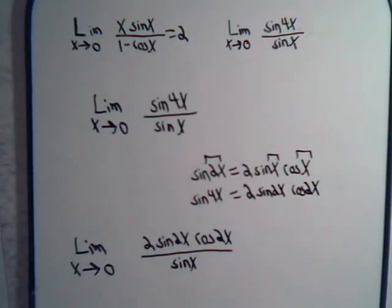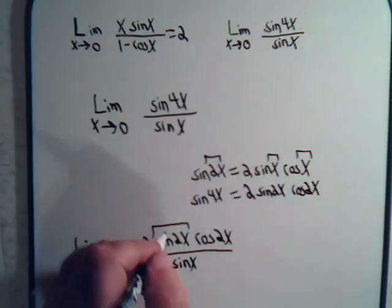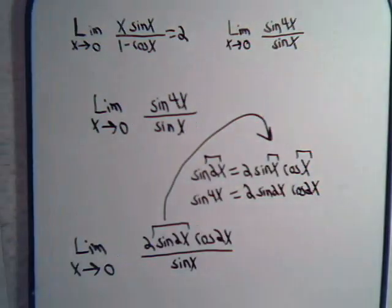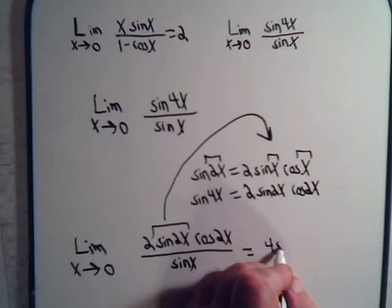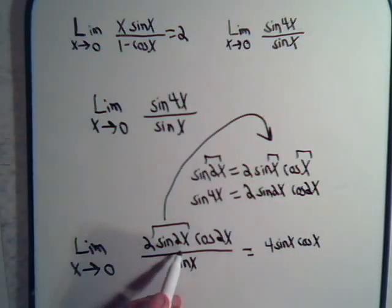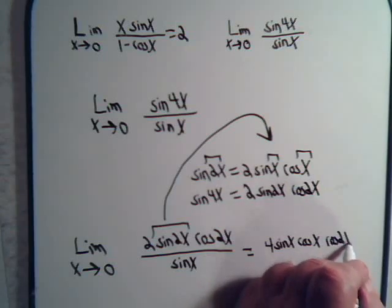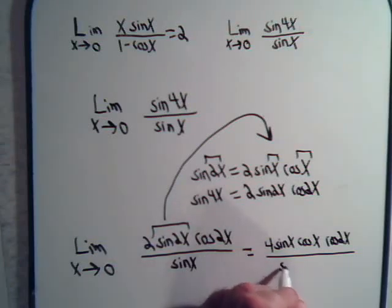But here, we still have these pesky, these troublesome sine functions. We put x equal to 0, that's 0, and that's going to be 0. But here, again, we have our double angle formula. This is this. So, once again, we can rewrite the numerator. It's going to be 2 times this stuff. So, that's going to be 4 times the sine of x times the cosine of x. That's 2 times the sine of 2x is 2 times this. And we have this, the cosine of 2x divided by the sine of x. Now, these things go away.